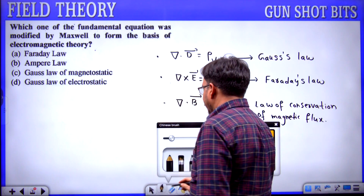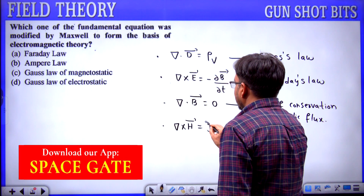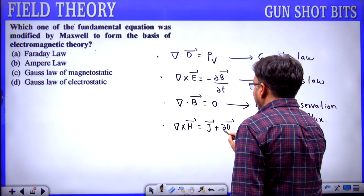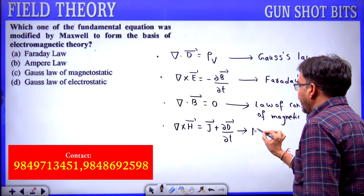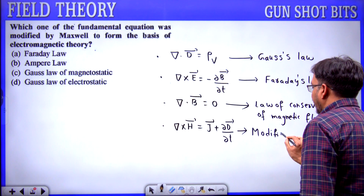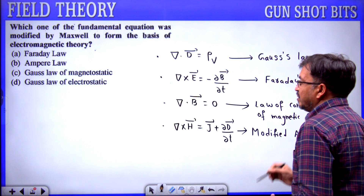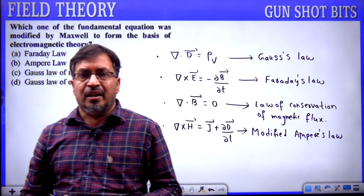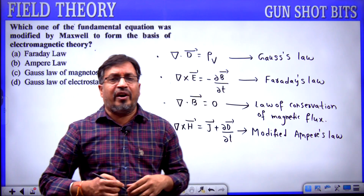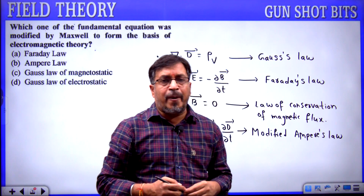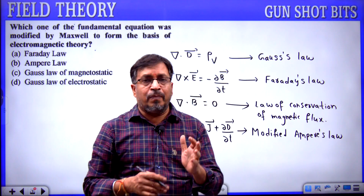The fourth Maxwell equation is curl H equals J plus dou·D/dou·t, obtained from the modified Ampere circuit law. Summarizing: div D = rho_v (Gauss law); curl E = −dou·B/dou·t (Faraday's law); div B = 0 (law of conservation of magnetic flux); curl H = J + dou·D/dou·t (modified Ampere circuit law).